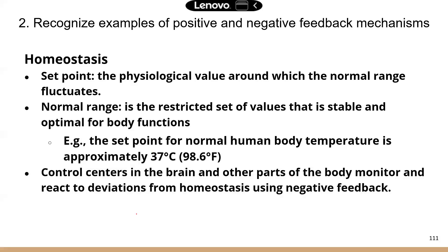Homeostasis, as we mentioned, is really just a stable, constant internal environment. There are a few terms I want to mention in this process, because they will help you understand positive and negative feedbacks. In order to maintain homeostasis, we have to have a set point — this is the physiological value around which the normal range fluctuates. Basically, this is the normal value, and you can fluctuate a little bit away from the set point, but it's going to be a very small range.